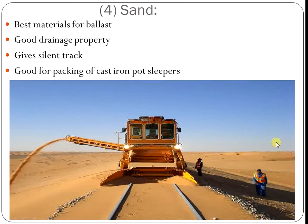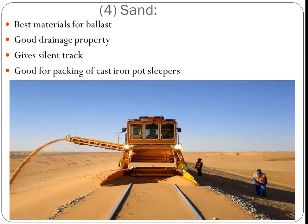The fourth type of ballast is sand. It is considered the best material for ballast in certain conditions. It has good drainage property, gives a silent strike, and is good for packing of cast iron pot slippers. This type of ballast is used in desert locations — for example, in India it is used in Rajasthan.